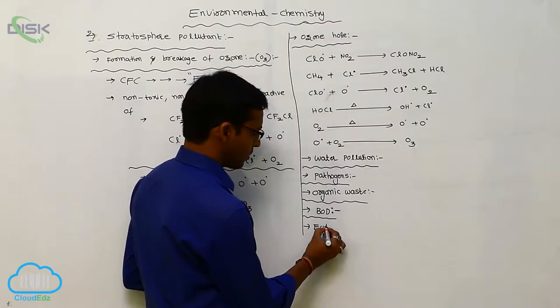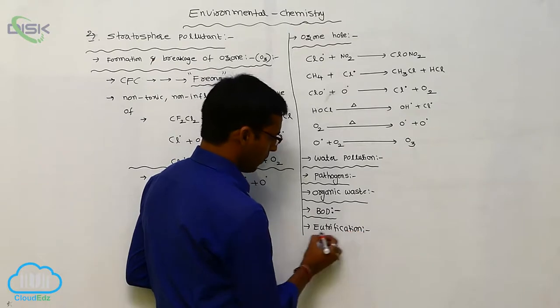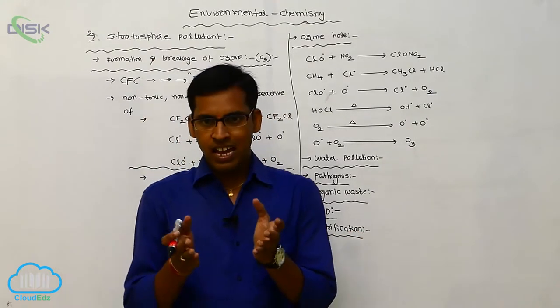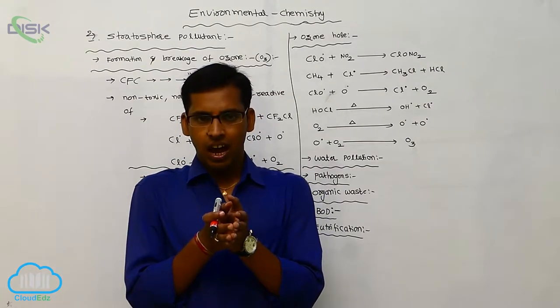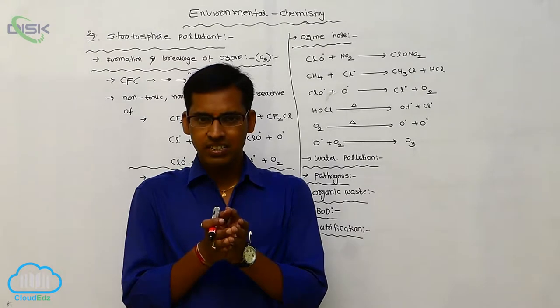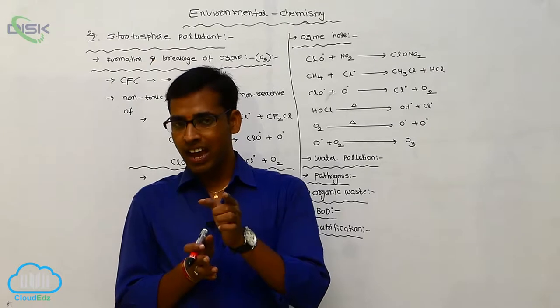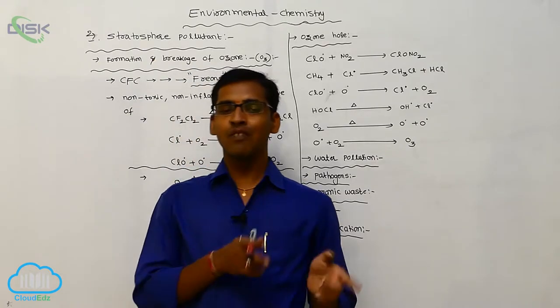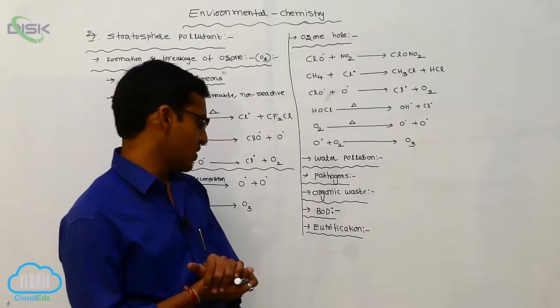It is called eutrophication. Eutrophication means the substance having more nutrients or enriched nutrients are present. Those enriched nutrients are suitable for the growth of plants and killing of animals. The loss of biodiversity is called the eutrophication process.